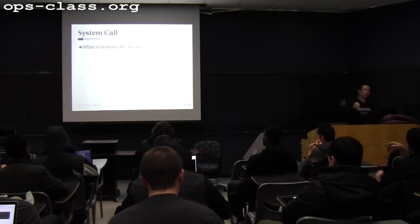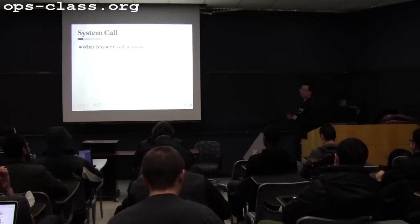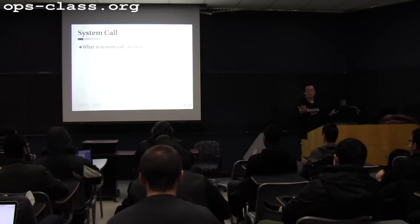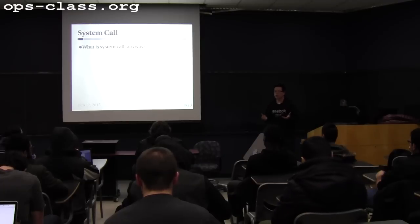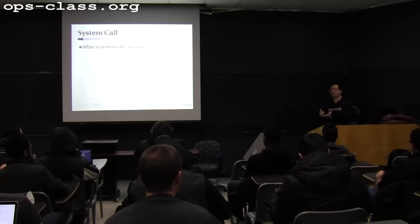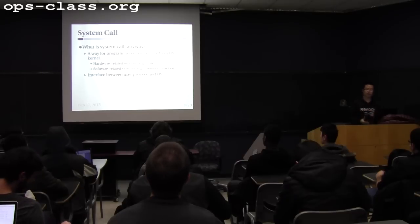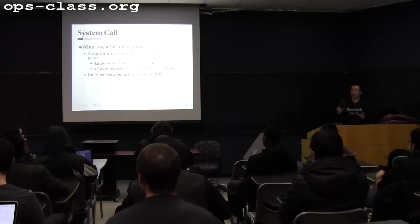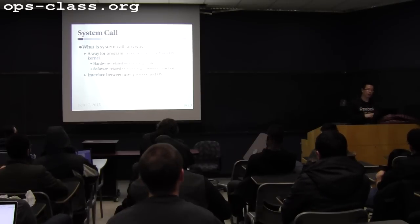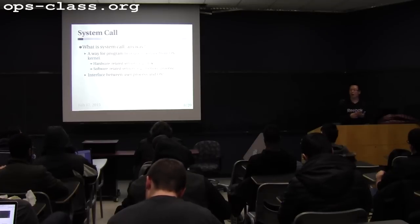Let's go to the first part: what is a syscall anyway? Ultimately, a syscall is a service offered by the operating system — a way for the user-layer program to request certain kinds of service from the OS kernel. For example, the service could be hardware-related, like accessing a block on disk, or software-related, like allocating memory or creating a new process. System call is the interface between the user process and the operating system, and it defines what kinds of services the OS offers.